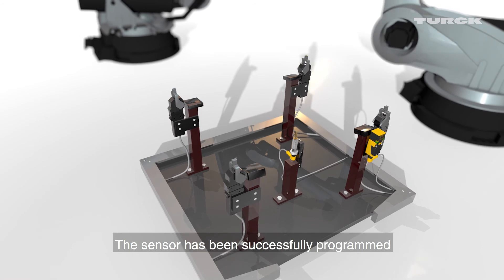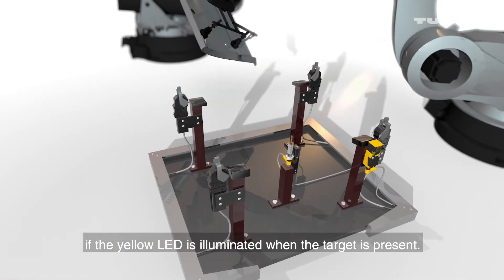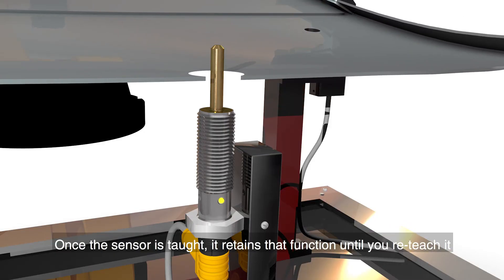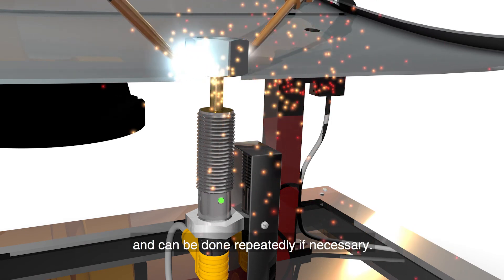The sensor has been successfully programmed if the yellow LED is illuminated when the target is present. Once the sensor is taught, it retains that function until you re-teach it and can be done repeatedly if necessary.